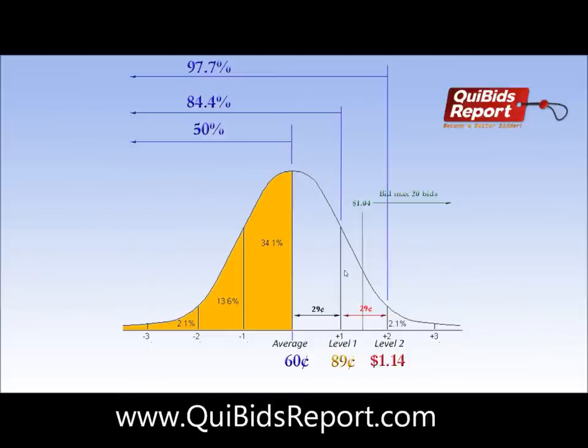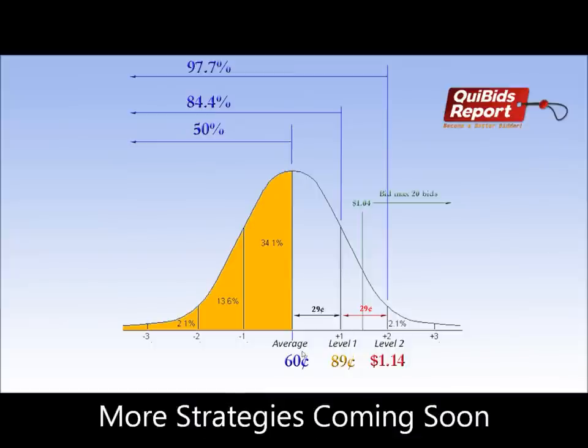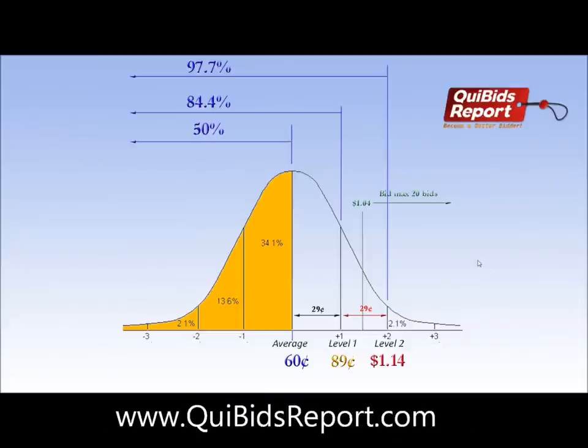That's the straddle method. Please come find us on Facebook and like us for the latest updates and stats. Quibid's Report should be up soon — we're going to have the averages, the level one, and the level two for every auction on Quibids, so you guys can become better bidders. I hope you find this video useful — come check us out. Thanks.